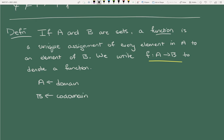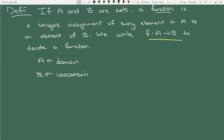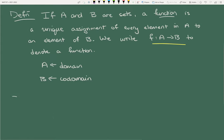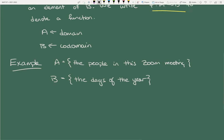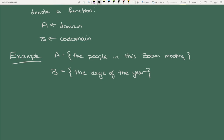Let me give you a non-standard example so we really can't think of it in terms of a graph. Let A be the people here — that's a perfectly reasonable set. And let B be the days of the year, so January 1st, March 15th, September 8th, those sorts of days. We can define a function which maps each person to their birthday. These aren't the types of functions we'll be studying, but sometimes it helps to have an abstract example in mind.